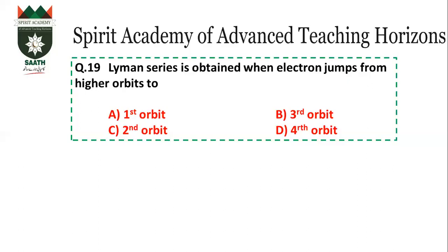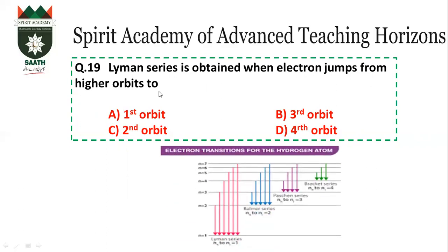Question number 19: Lyman series is obtained when an electron jumps from higher orbits to which orbit? The first series is Lyman series, in which the electron jumps to the first orbit. If it were Balmer, it would be the second orbit; Paschen — third; Brackett — fourth; and Pfund — fifth orbit. The answer is A (first orbit).